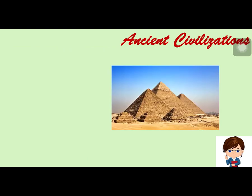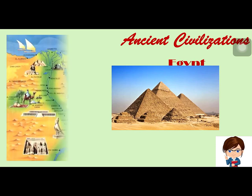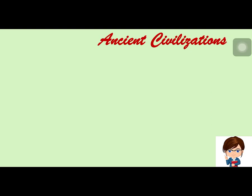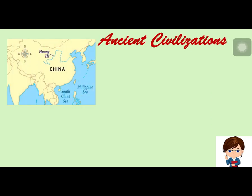Beginning around 2700 BC, several pyramids were built in Egypt, most of which were built as tombs for the country's pharaohs and their consorts during the Old and Middle Kingdom periods. The construction of pyramids posed formidable challenges regarding foundation stability of slopes and construction of underground chambers.